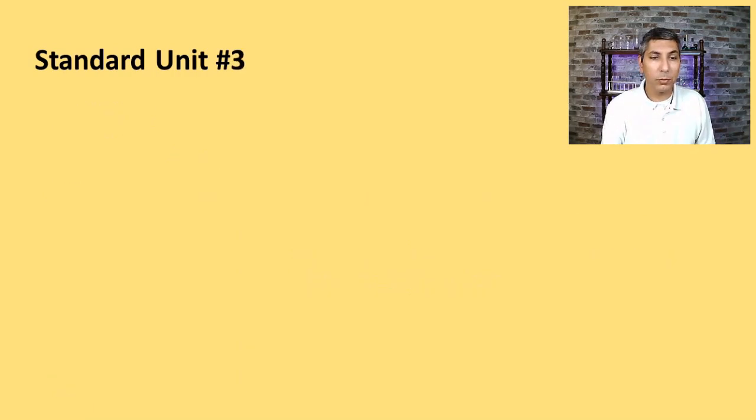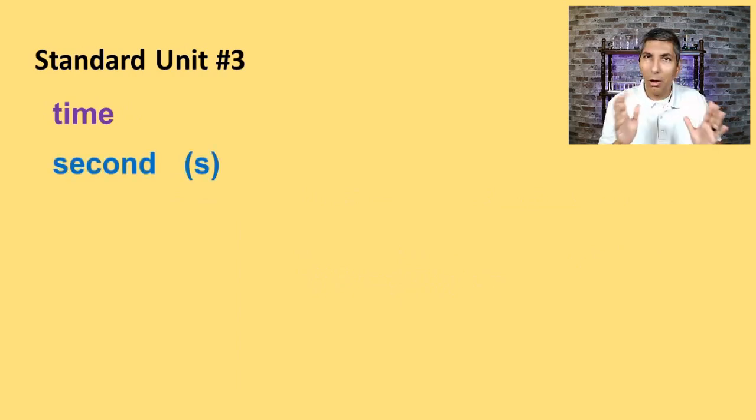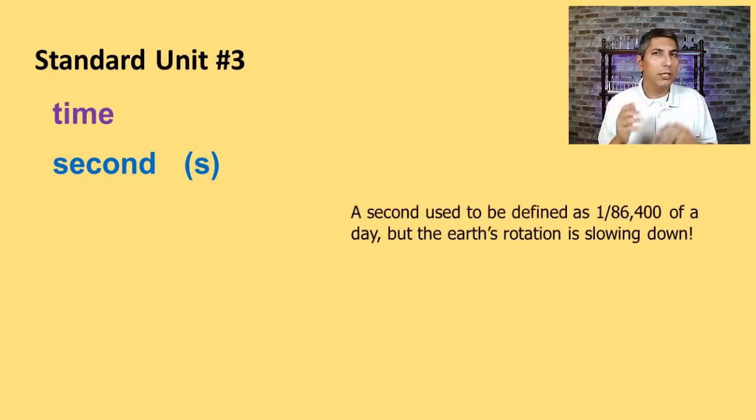Now, a third unit of measurement we're going to talk about that's a standard is the unit of time. And the unit of time is the second. I imagine you're all familiar with how long a second is. Years ago, before SI came onto the scene, a second used to be defined as 1 over 86,400th of a day, basically the length of time it takes for the earth to rotate on its axis. But there's a problem with using the second being defined as a fraction of a day, because we find that the earth's rotation is slowly but surely slowing down.